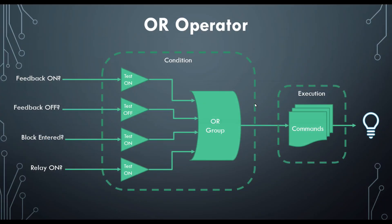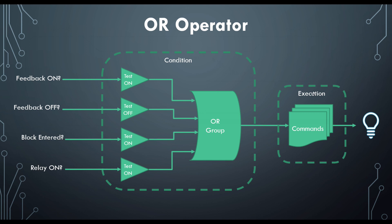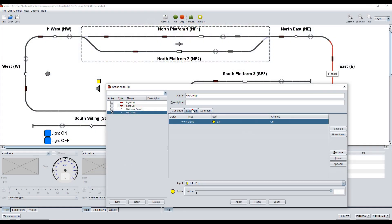The contents of this dashed box represents the conditions tab in the action. Here's the conditions tab and its contents. And this dashed box represents the execution tab in the action. Here's the execution tab and its contents.